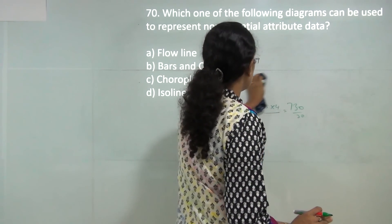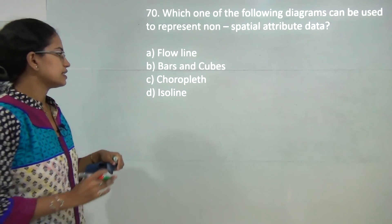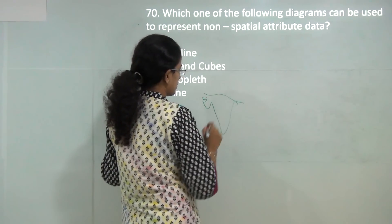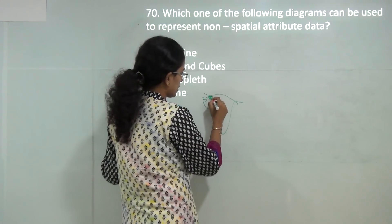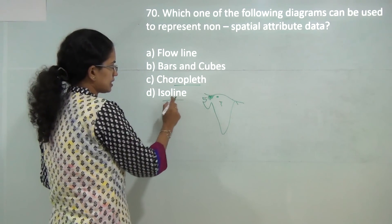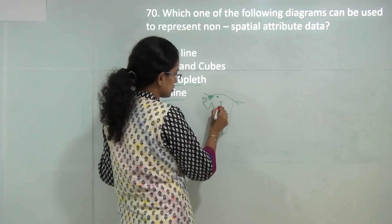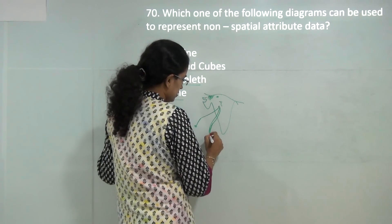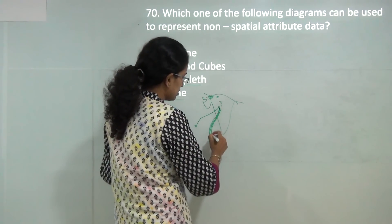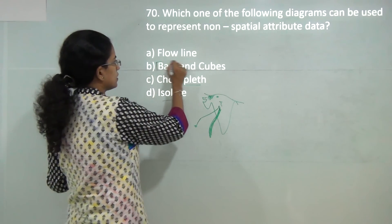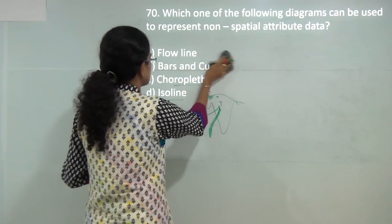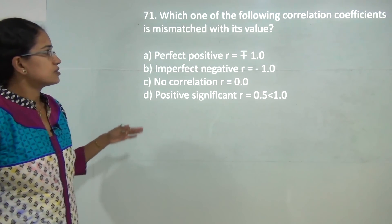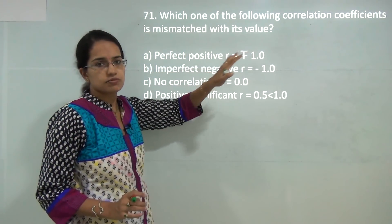Which diagram can be used to represent non-spatial attribute data? Spatial is something that can be located in space, or what can be represented on a map in simple terms. You have isolines that represent places joining equal values on a map. Then I can shade the region with dark, less dark, and further less dark, so that would be choropleth, again done on map. Flow lines are communication or transport patterns. However, bars and cubes do not necessarily require a map. You can display information on bars and cubes even without a map, so bars and cubes can be used for non-spatial attribute data as well.